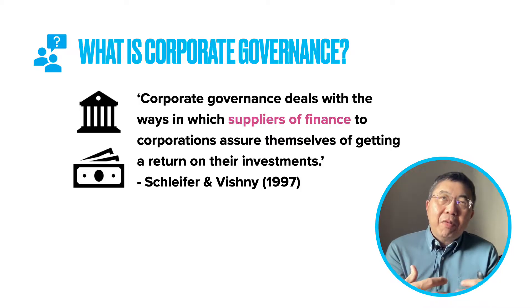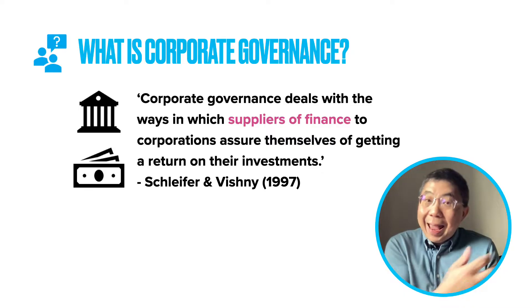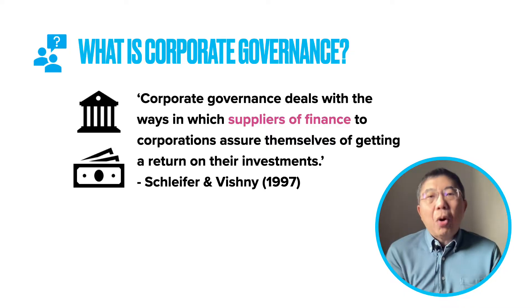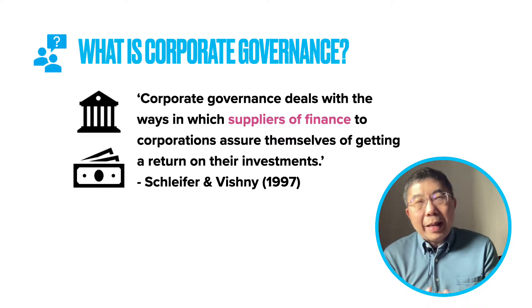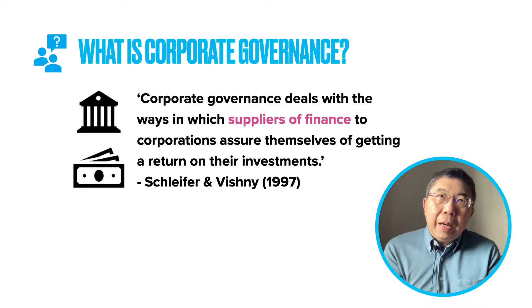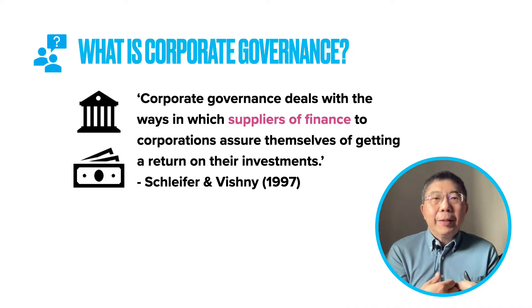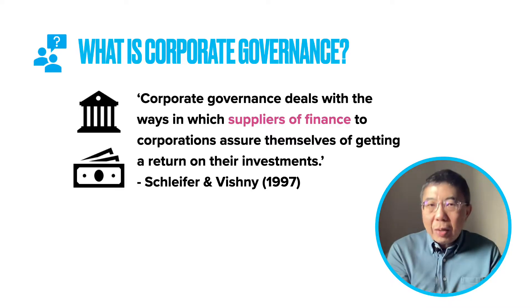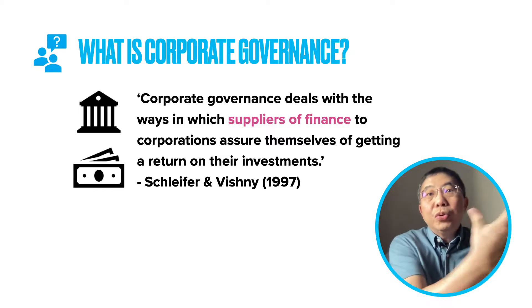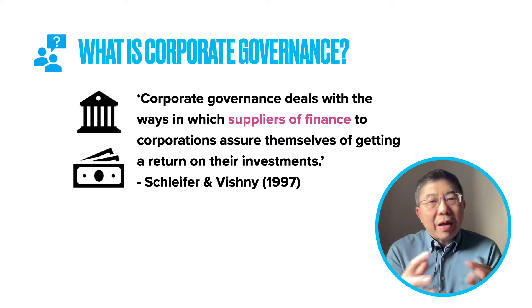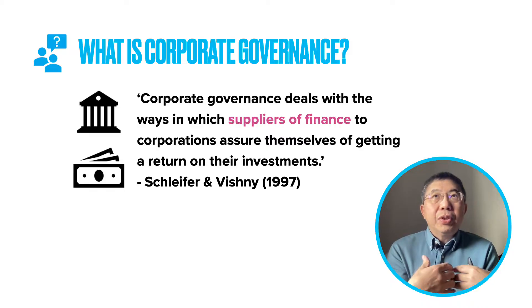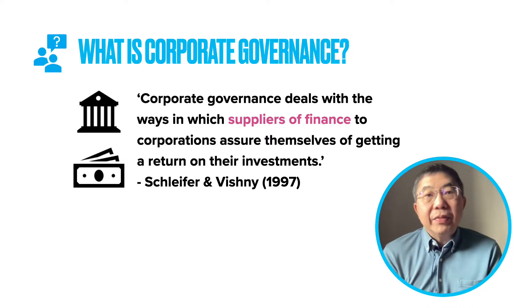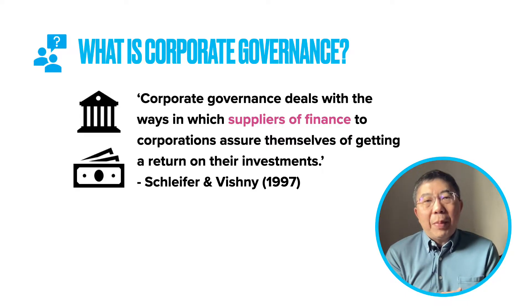So the debt providers may not be taking as much risk as the shareholders. The shareholders take on a lot of risk — they put money into the company with no guarantee that it will be returned with an adequate return. So Schleifer and Vishny's definition implies that shareholders have a greater risk, and as a result there is a greater need to assure that shareholders get a good return. Their definition therefore slants towards shareholder primacy — the shareholders' need for corporate governance.